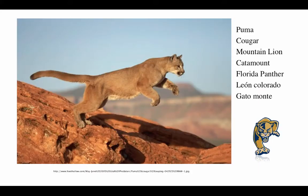But as people started moving around from region to region, what they found is that often in different places they would have different names for basically the same animal or plant or any kind of organism. That's really not very helpful because you don't know whether you're talking about the same thing or something different. If I talk to you about a puma, my friend in California calls it a cougar, elsewhere in the United States they call it a mountain lion or a catamount, a Florida panther down here, or south of the border, a leon colorado or gato monte. How do we know whether we're talking about the same kind of animal or a different kind of animal?